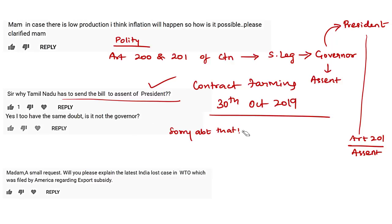With regard to the specific reasons why the Governor of Tamil Nadu reserved the bill for the President's consideration, we are unable to get those reasons from authentic sources. The next comment asks to explain India's lost case in the WTO filed by America regarding export subsidies. We would like to inform that this matter will be discussed along with the Hindu news analysis when we analyze a similarly situated news article with respect to WTO. This concludes the Comments and Clarifications section.